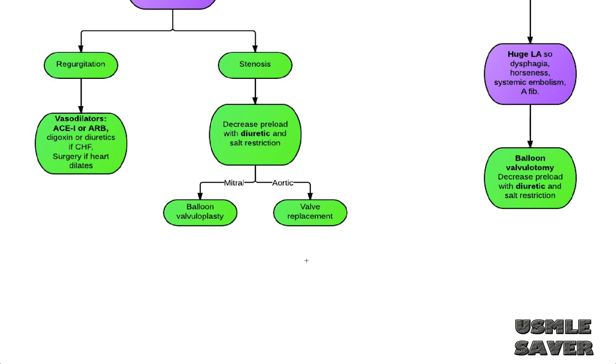Aortic murmurs are best heard at right sternal border of second intercostal space. Pulmonary murmurs are best heard at left sternal border of second intercostal space. Tricuspid murmurs are best heard at left sternal border of fifth intercostal space. And mitral murmurs are best heard at mid-clavicular line of fifth intercostal space.